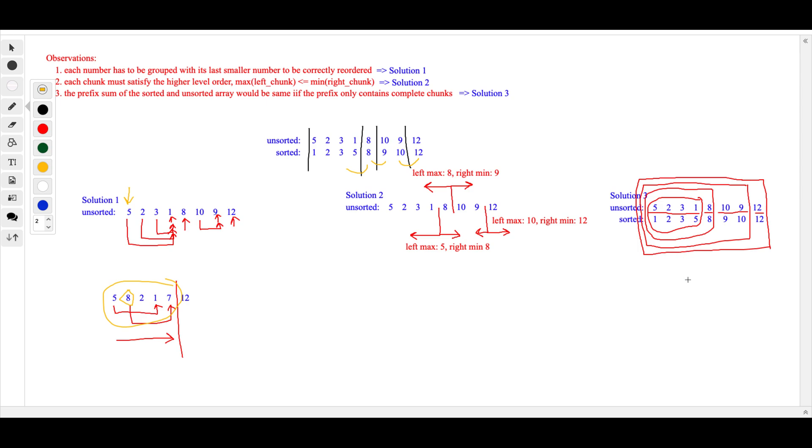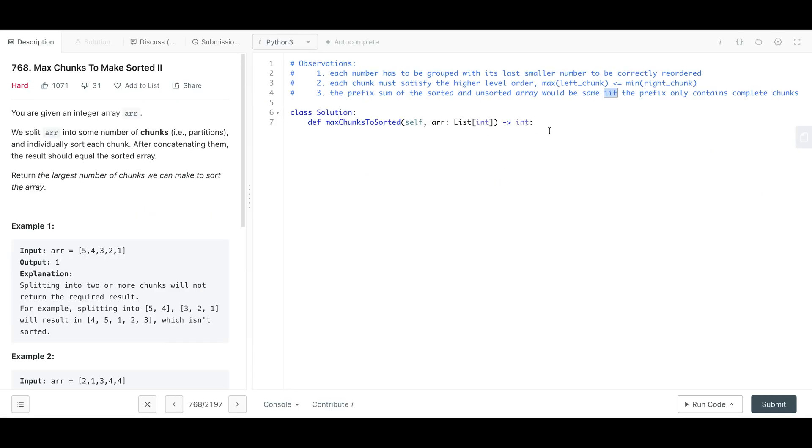Solution three is the least intuitive one to think but is the most elegant one to implement. The idea is when you go from left to right together through the unsorted version and the sorted version, the sum of the prefix between the unsorted version and the sorted version will be the same if and only if this prefix ends at the boundary between two chunks. This is a very clean way to solve this but it's very hard to think of. Now let's write the solution.